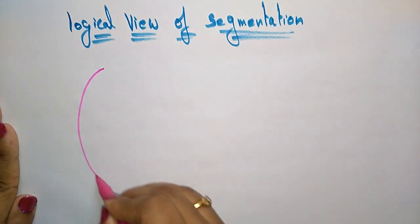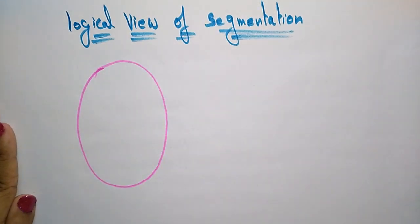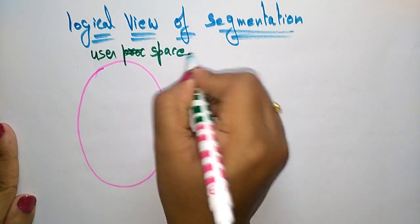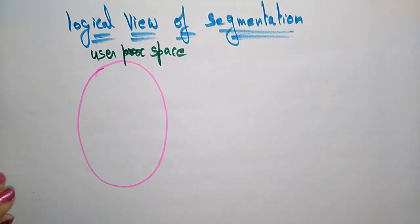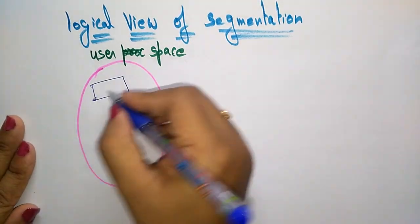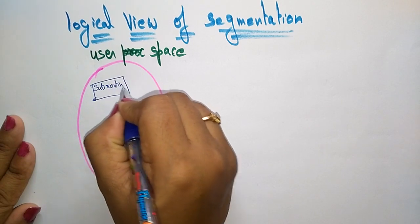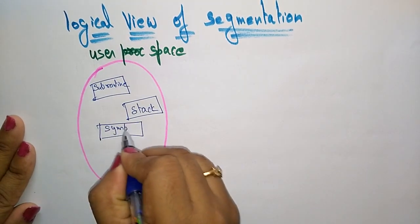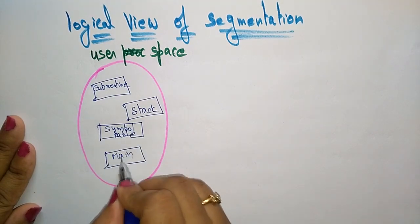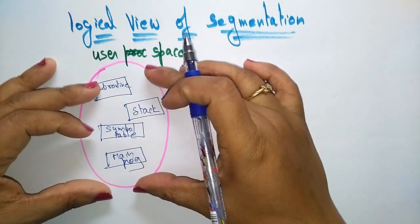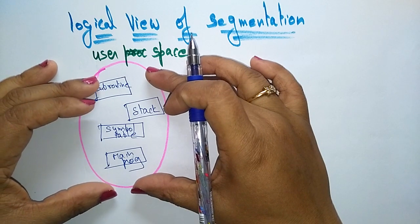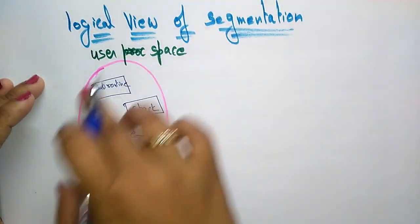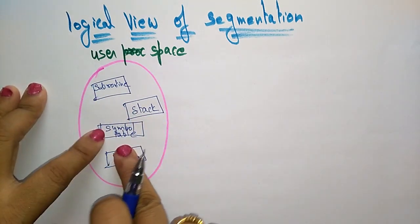Suppose this is the user space — that is, a user program. This user process has a set of segments. So this is one segment — let us take this is a subroutine of the program. And here suppose we take the stack, and suppose we take the symbol table, or the main program. So in this user space, the program — whatever input the user gives — consists of a set of segments: subroutine, stack, symbol table, and main program. This program is a collection of segments.